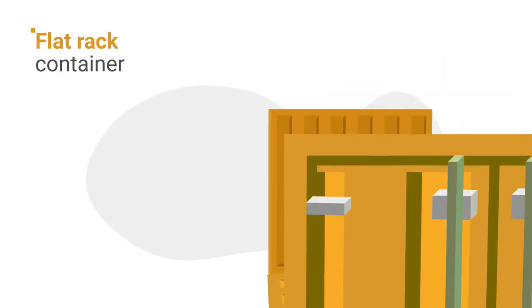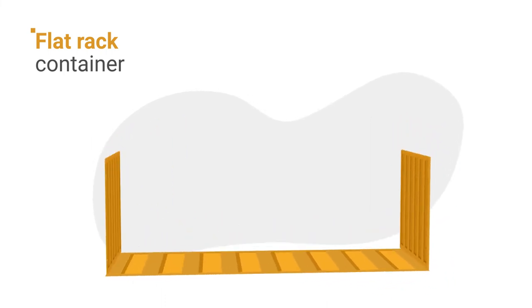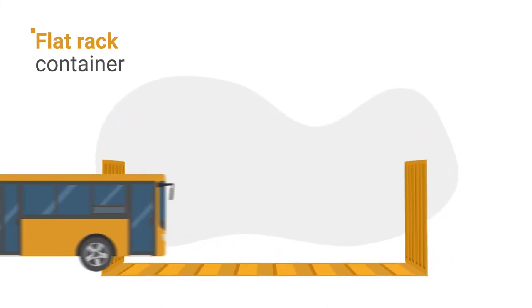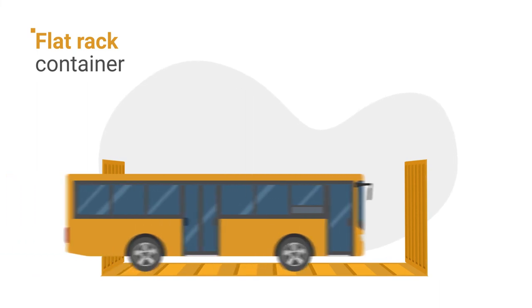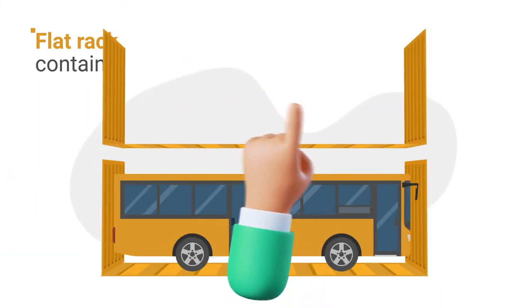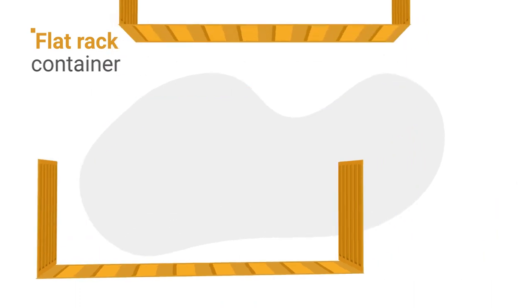6. Flat Rack Container. Flat rack containers only have sides on the short ends of the container, making them perfect for heavy loads and bulky cargo that may exceed the dimensions of a closed container. But because they can't be stacked, flat rack containers may cost more to use.